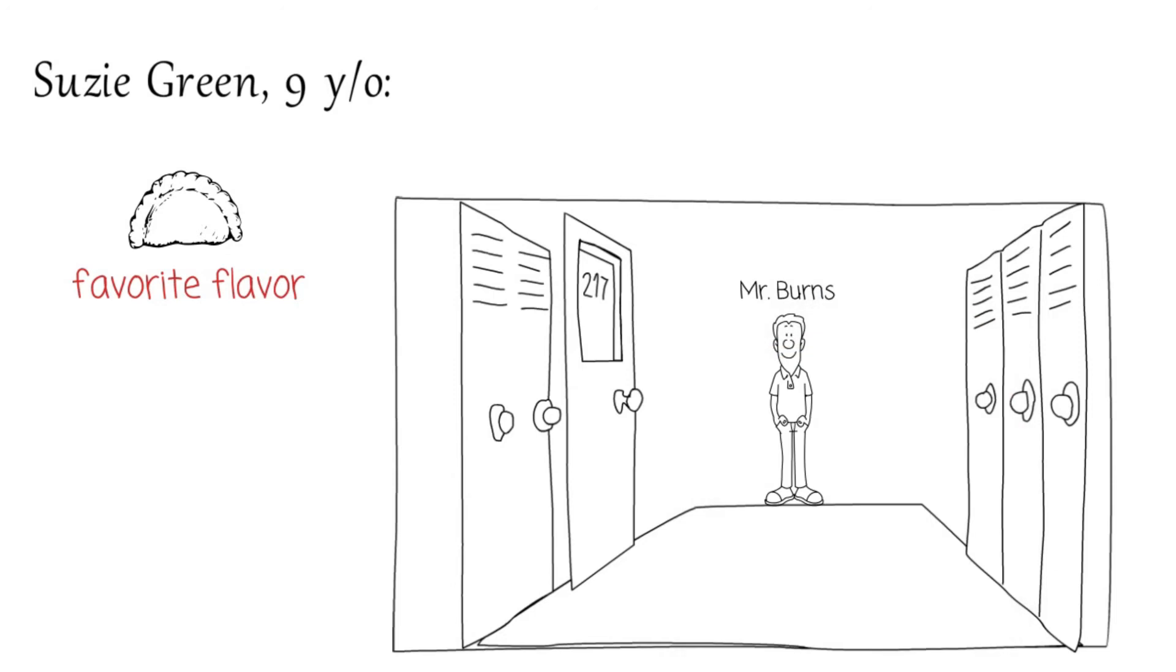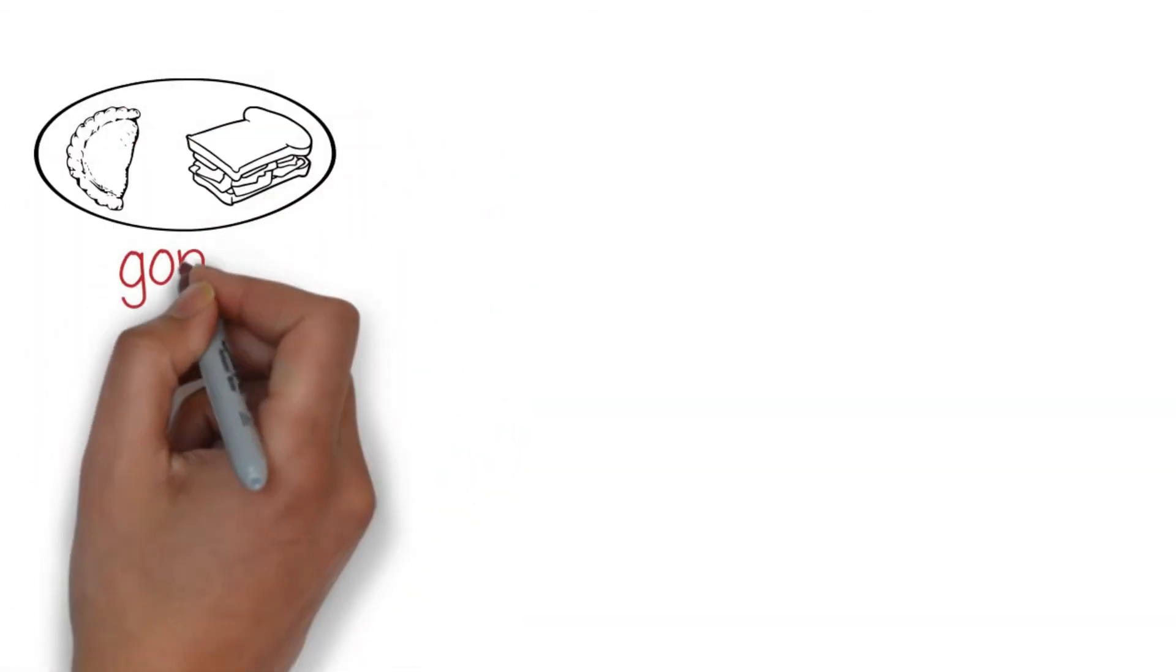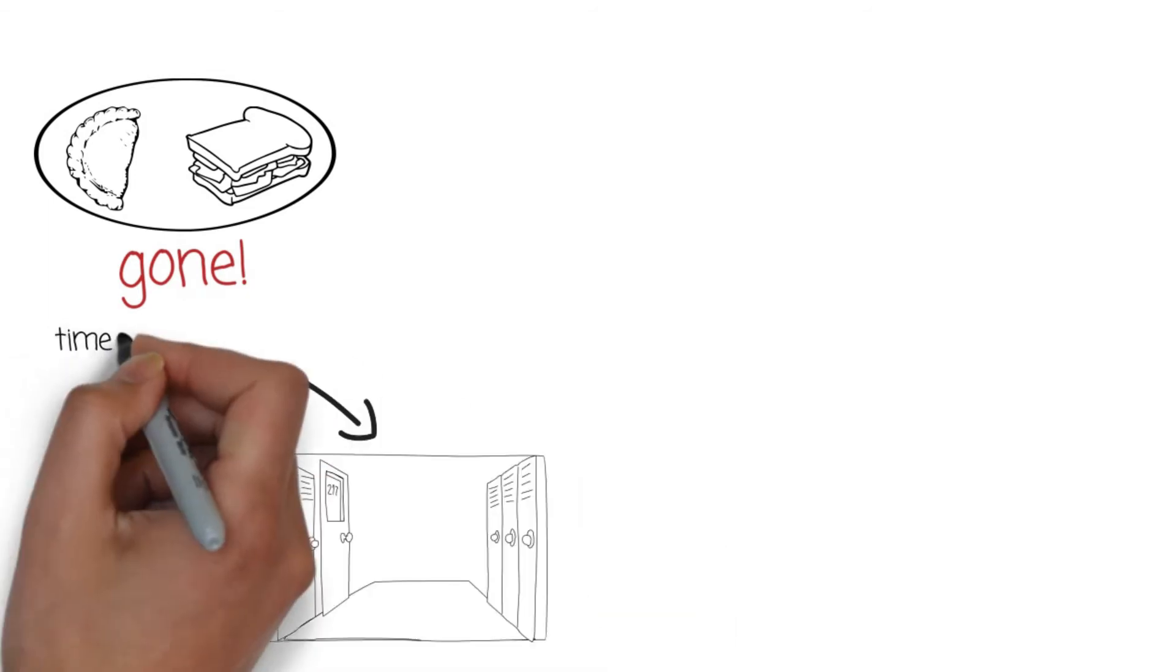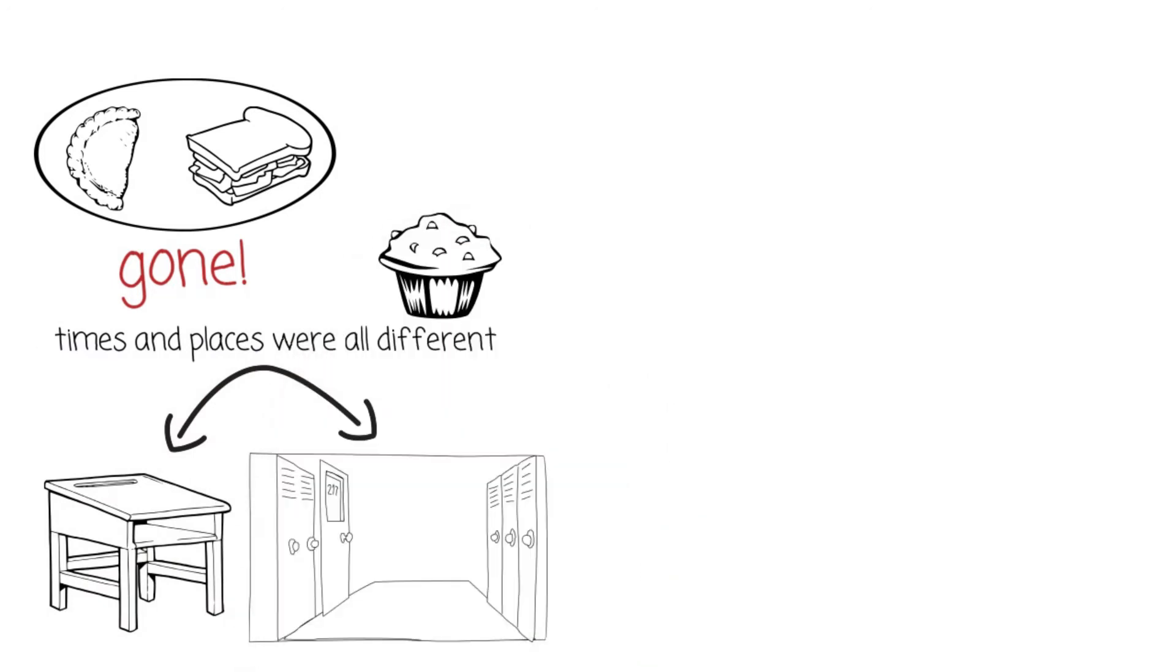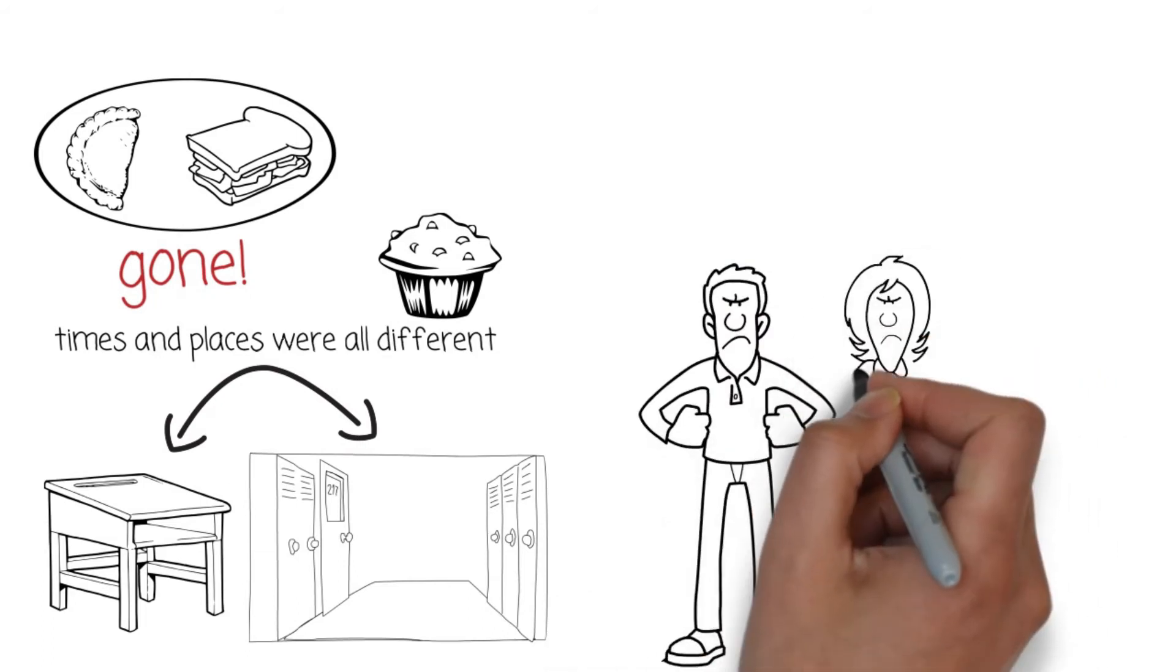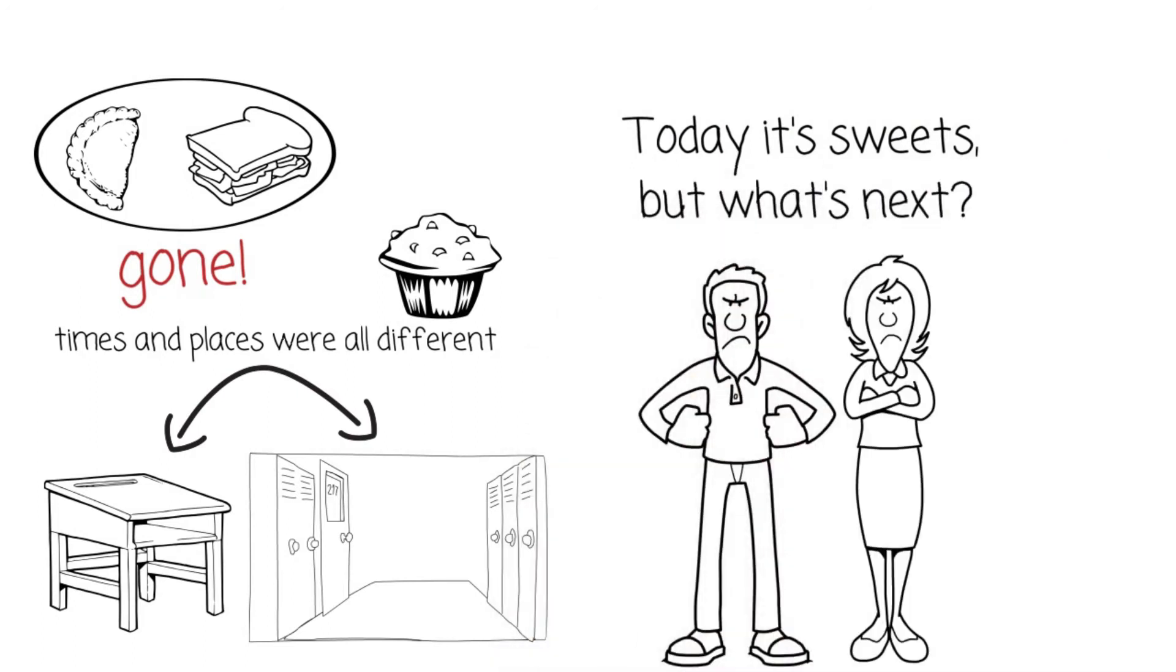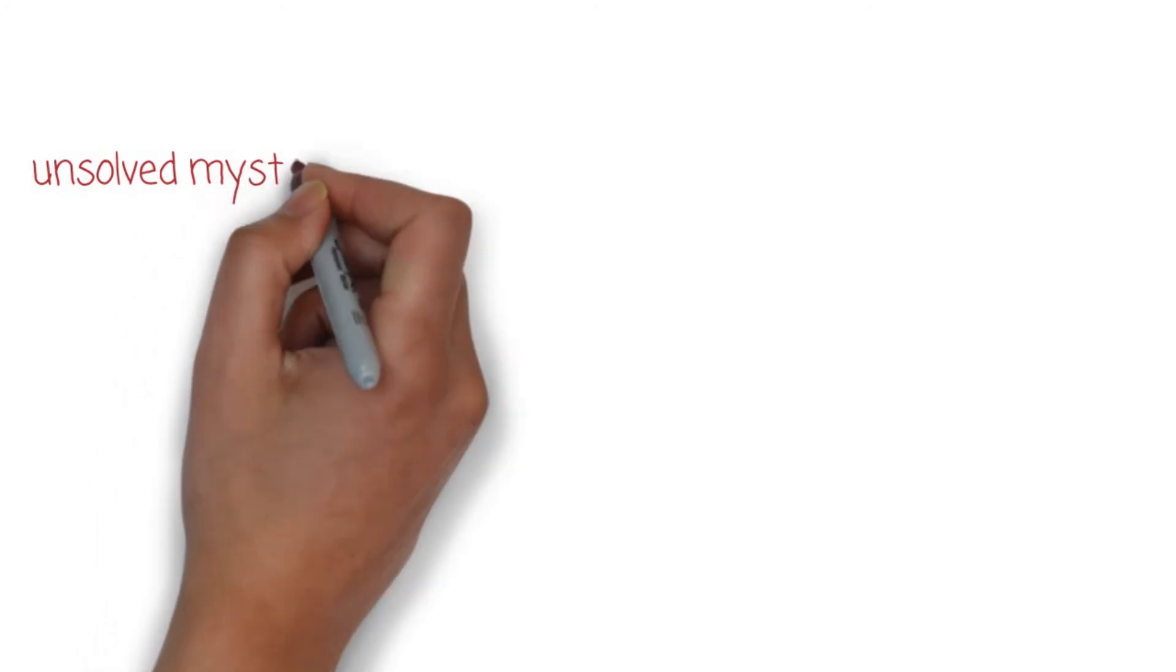All students' accounts were similar. One moment their treats were there and when they had their back turned, gone. The times and places were all different but they all had one thing in common: a single blueberry bran muffin was left in their place. Students feared bringing any goodies to school and parents were furious. Today it's sweets but what's next? It was reminiscent of an unsolved mystery that occurred in your early years.